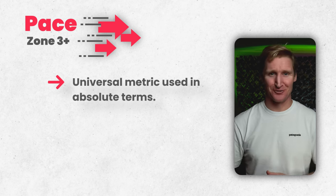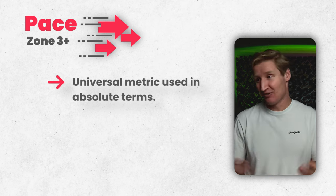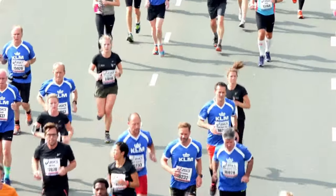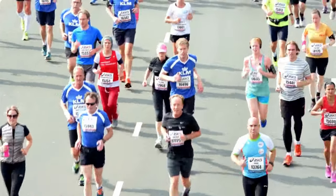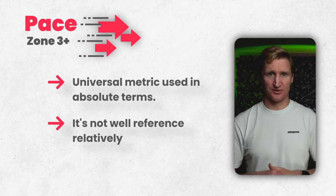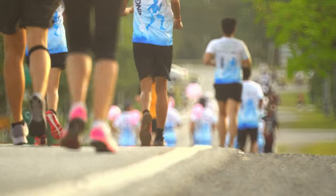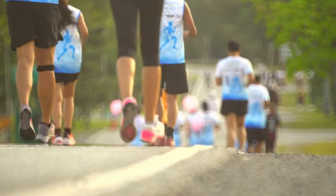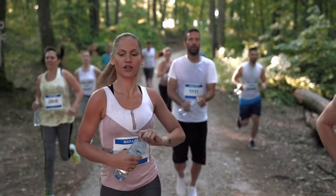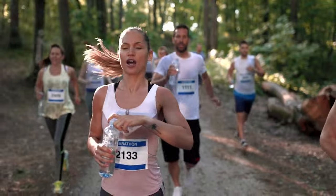Pace is the most universally understood metric of them all because it can be referenced in absolute terms. Everyone pretty much knows what you mean when you say a seven-minute mile — they know how long that would take to complete a certain distance and whether that's easy or hard. The thing is, it's not very well referenced relatively, since everything is relative to our threshold. If we're doing a zone two run in a pace-based system and you start doing it on trail over undulating terrain, pace gets pretty murky. No doubt you're running above your actual zone two trying to stay in a pace zone on the hills, and then you're probably going a little too slow on the downhills — you've entered the gray zone.